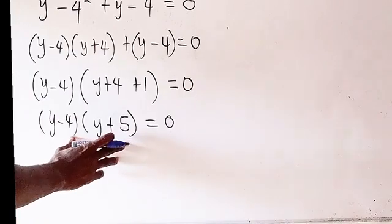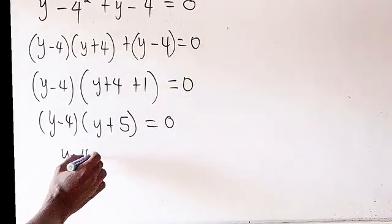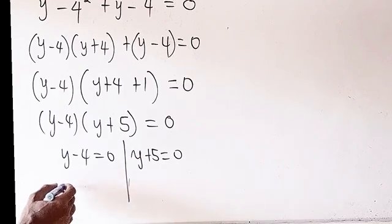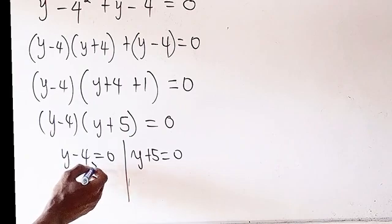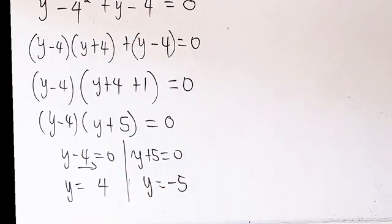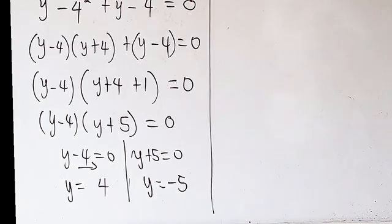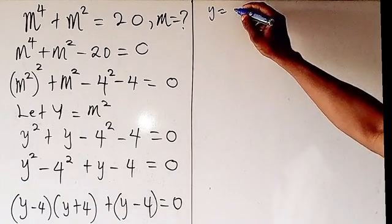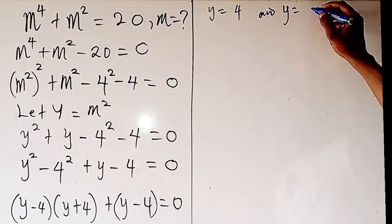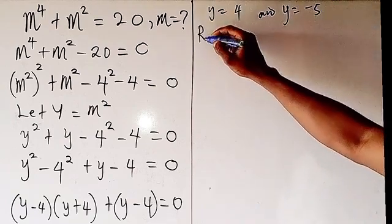Since this product equals 0, it is either y minus 4 equals 0 or y plus 5 equals 0. Transposing gives us y equals 4 from the first equation, and y equals minus 5 from the second. But don't forget the value we are looking for is not y — we are looking for the value of m, which is the main variable.